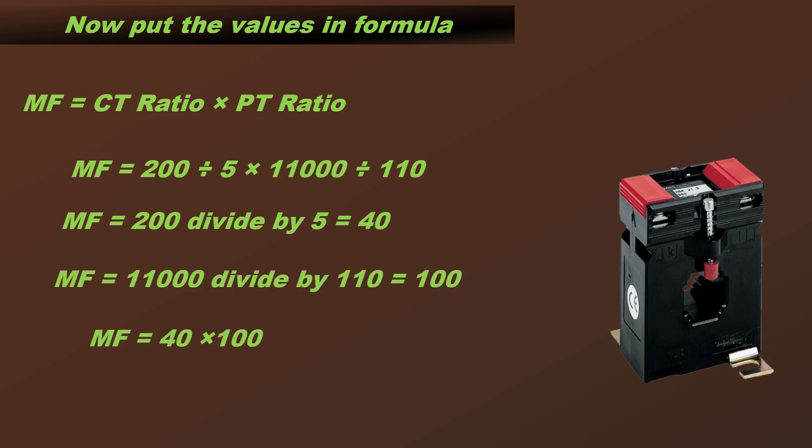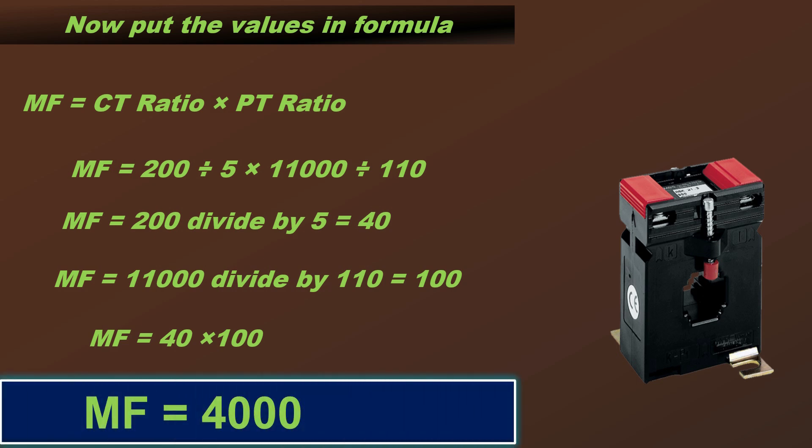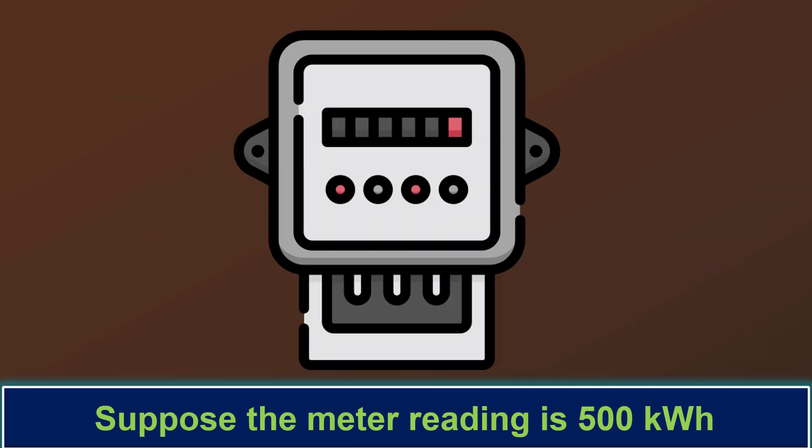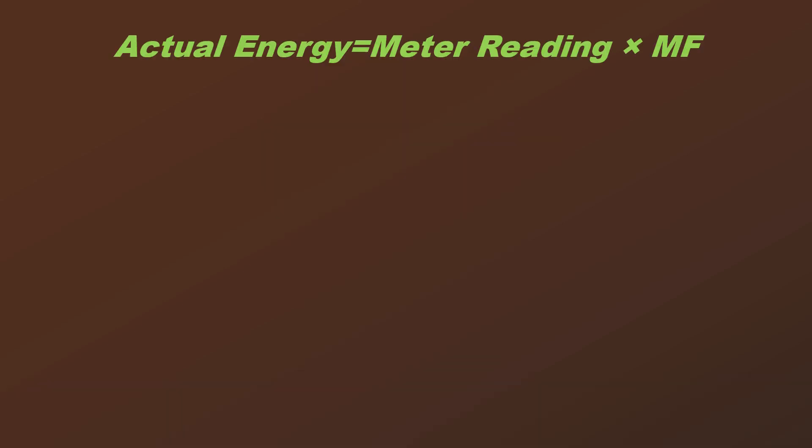Suppose the meter reading is 500 kilowatt-hour. To get the actual energy consumption: Actual energy = meter reading × multiplication factor. Actual energy = 500 × 4,000.